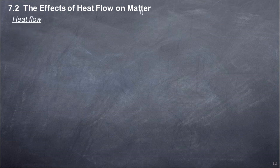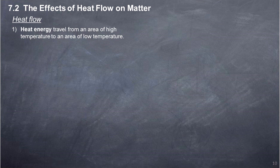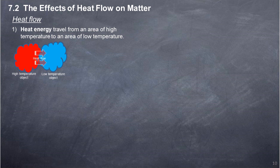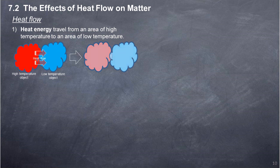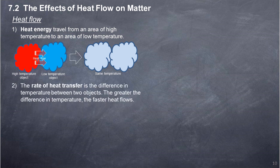Heat flow. Heat energy travels from an area of high temperature to an area of low temperature. When an object comes into contact with another object, heat energy will flow from the hotter object to the colder object. The temperature of the hotter object falls while the temperature of the colder object rises, until both objects are at the same temperature. The rate of heat transfer depends on the difference in temperature between two objects — the greater the difference, the faster heat flows.